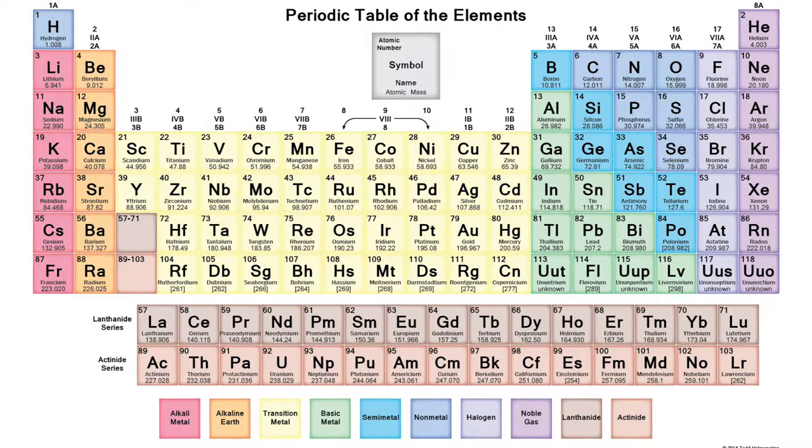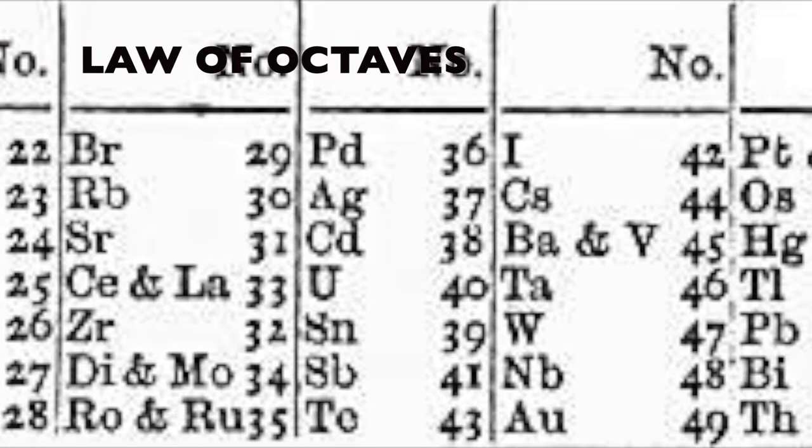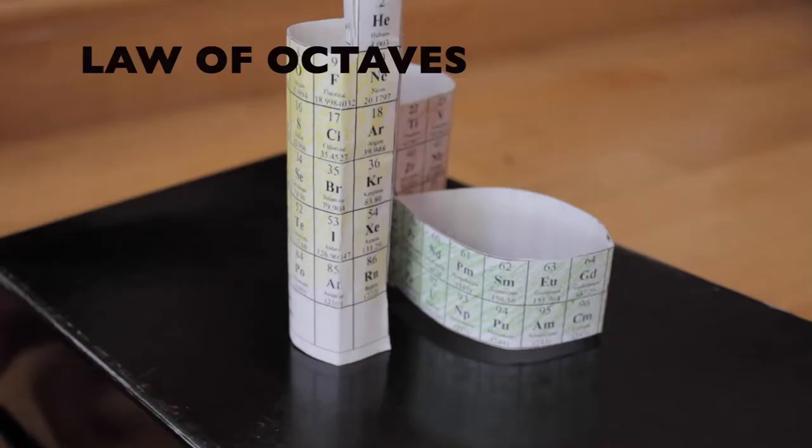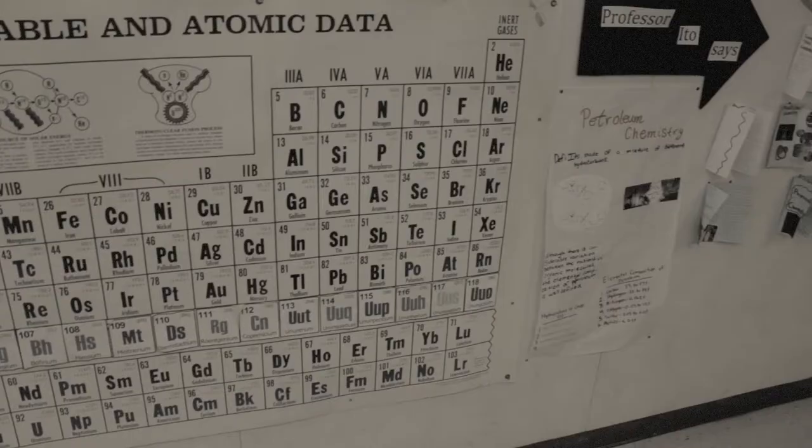In 1865, he published his Law of Octaves, which stated that any given element will exhibit analogous behavior to the 8th element following it in the table. In Newlands' table, the elements were ordered by the atomic weights that were known at the time and were numbered sequentially to show their order in 3D.